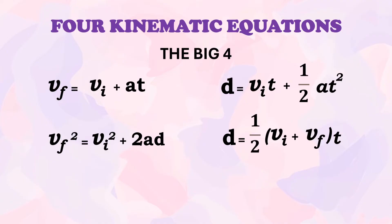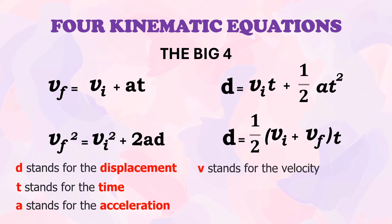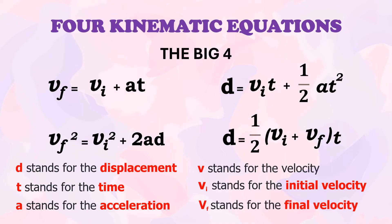There are a variety of symbols used in these equations. The symbol D stands for displacement, T stands for time, A stands for acceleration, and V stands for velocity. The subscript I after V indicates initial velocity, while subscript F indicates final velocity. These equations can be used for constant velocity motion or constant acceleration motion, but they can never be used over any time period during which the acceleration is changing.